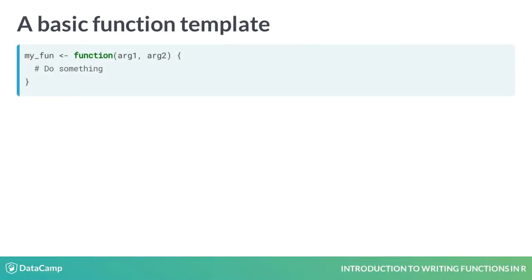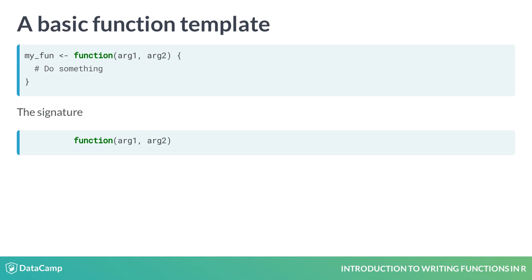The syntax for defining a function follows this template. In R, functions are a type of variable, so you assign functions using the left arrow, just like anything else. That first line with the word function, followed by arguments inside parentheses, is called the function signature. This names the variables that are passed into the function — it's the user interface to the function. The bits inside the curly braces are called the body of the function. This is where the calculation happens.